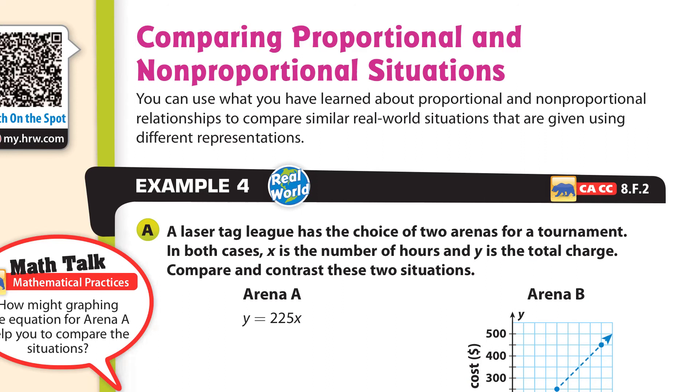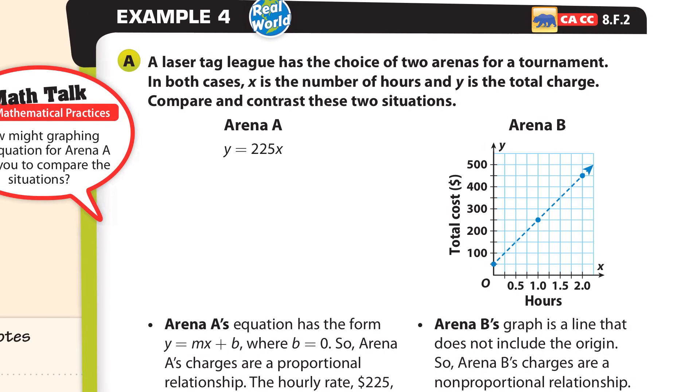So the question is, how can you use what you've learned about proportional and non-proportional relationships to compare these real-world situations? We've got an example four. The laser tag league has the choice of two arenas for a tournament. In both cases, x is the number of hours and y is the total charge. Compare and contrast these two situations. We have arena A, y equals 225x. So 225 dollars times the number of hours will be the total charge. And we have this graph that shows the time in hours compared to the total cost.